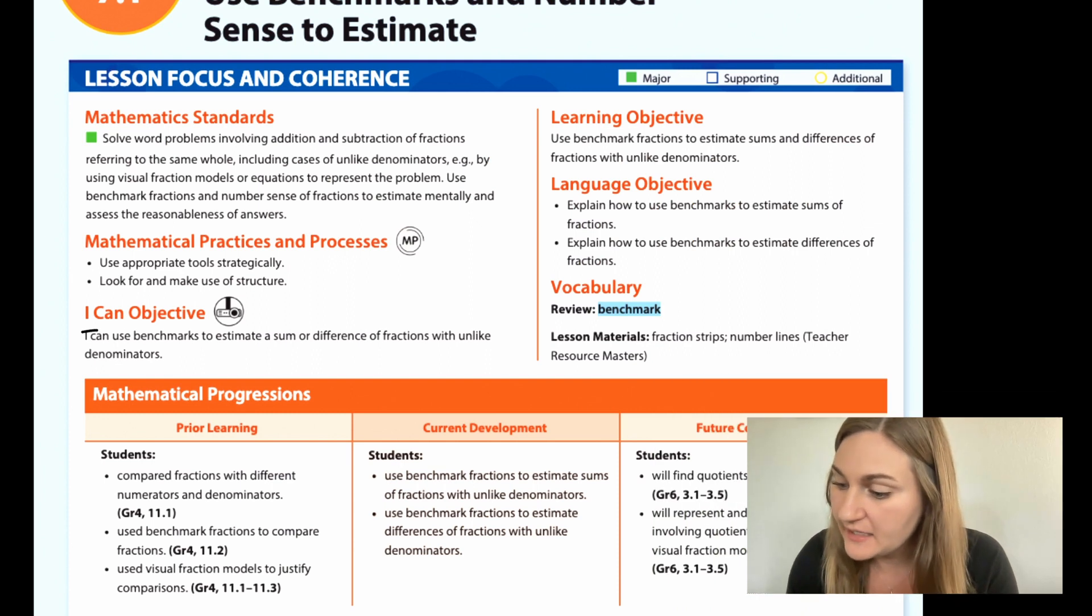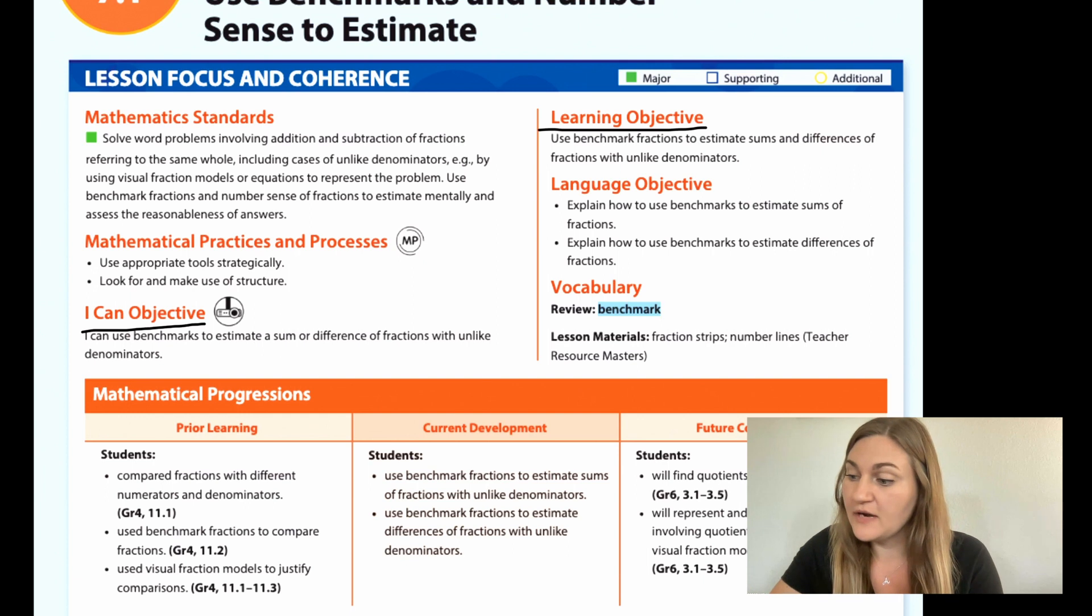I'm going to start by going over the I can objective. It says I can use benchmarks to estimate a sum or difference of fractions with unlike denominators. The learning objective says use benchmark fractions to estimate sums and differences of fractions with unlike denominators. The prior learning is that students compared fractions with different numerators and denominators, use benchmark fractions to compare fractions, and use visual fraction models to justify comparisons.